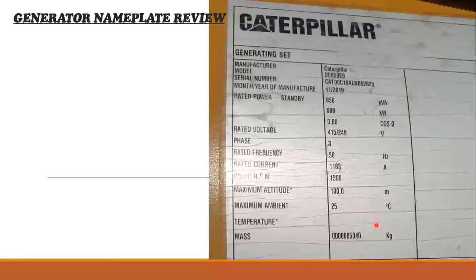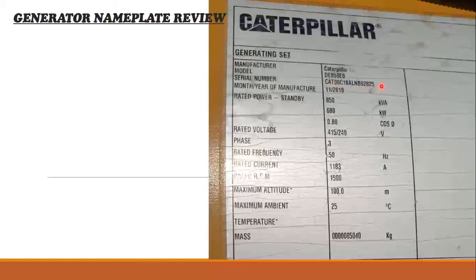We have taken one generator nameplate — the brand is Caterpillar. The first thing you will see is the manufacturer, which in this case is Caterpillar. Then we have the model: DE850EO, which means a diesel engine generator with a rating of 850. Each generator set has a specific serial number mentioned on the nameplate. This unit was manufactured in November 2019.